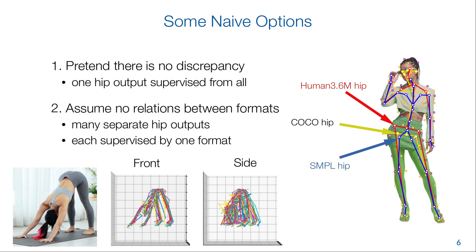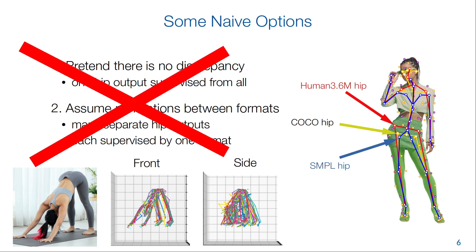Unfortunately, this second option doesn't work very well either. The depth predictions for the different skeletons become inconsistent with each other. It seems that these different labels don't end up supervising a single internal human representation. So instead, we propose to find a good middle ground and establish some relations between the formats without assuming that they are all the same.